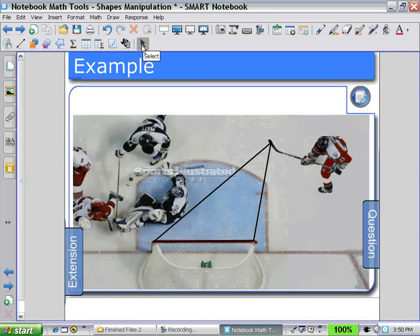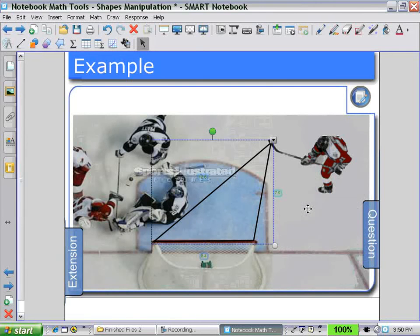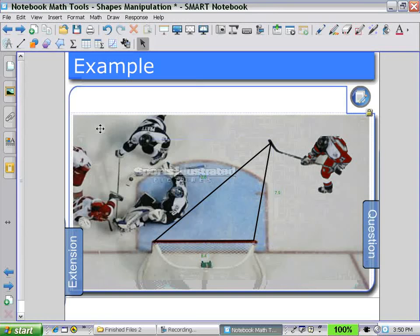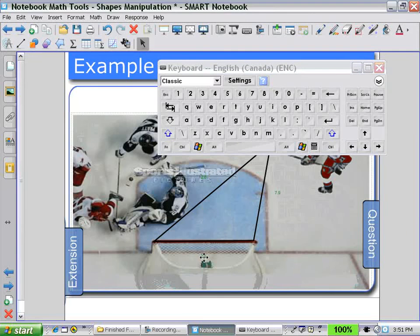Select the shape and show the side lengths. Now since the net regulation size is 6 feet, we can, again, input the value 6 by clicking on the side length.